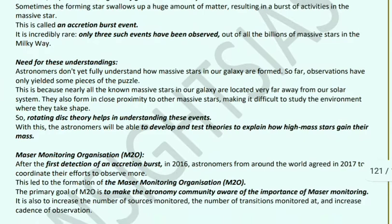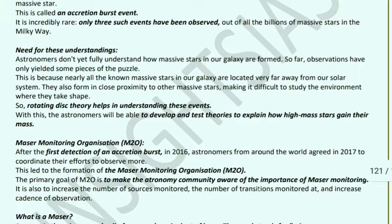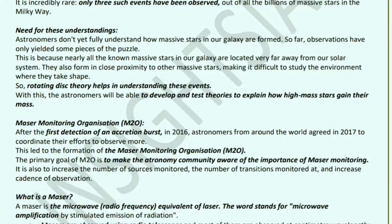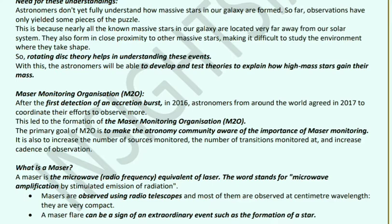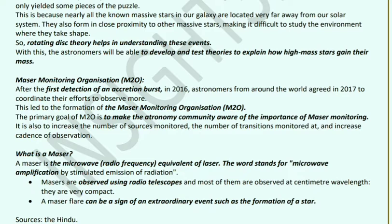Astronomers have not yet fully understood how stars in our galaxy were formed — observations have left us with more puzzles. All known massive stars in our galaxy are very far from our solar system and form in close proximity to other massive stars, making it difficult to understand their environment. The rotating disk theory can help us understand these events and help astronomers develop and test theories to explain how high-mass stars gain their mass.